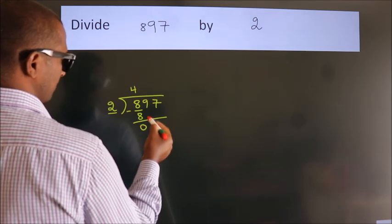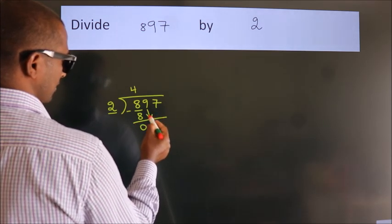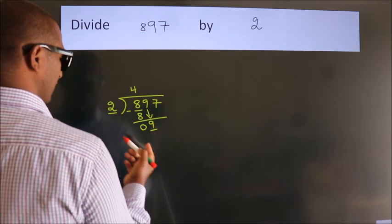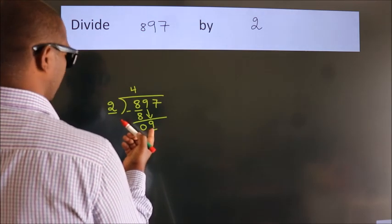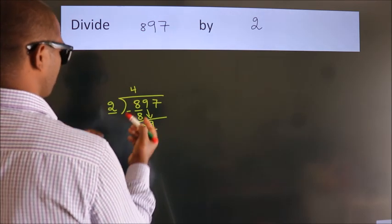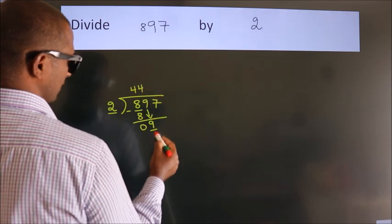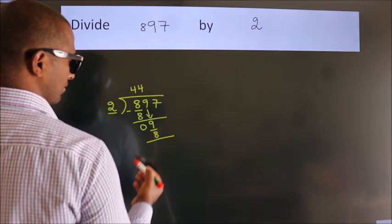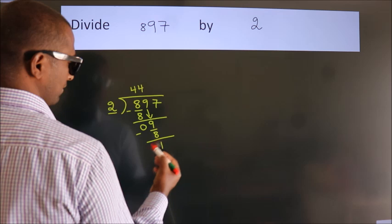After this, bring down the beside number. So 9 down. So 9. A number close to 9 in 2 table is 2 fours, 8. Now, we subtract. We get 1.